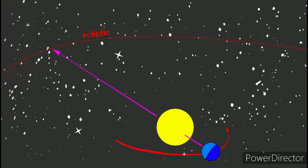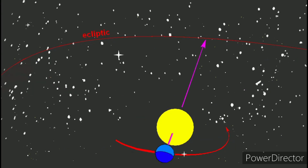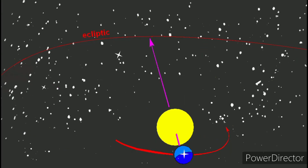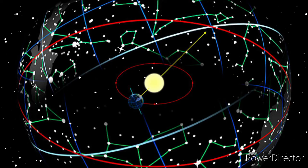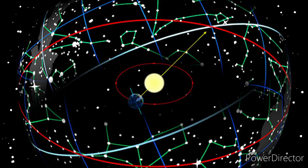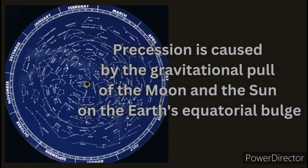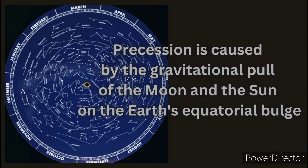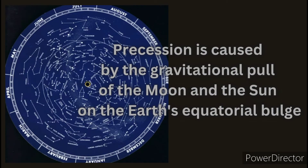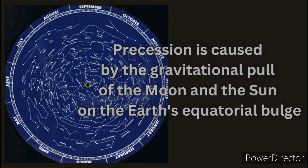Constellations are seen at different times of the year because of the Earth's orbit around the sun. As the Earth revolves around the sun, the position of the sun in the sky appears to change. As a result, the position of the stars relative to the sun also appears to change. This apparent change is due to the fact that the stars are very far away from the Earth and therefore appear to be fixed in the sky. The position of constellations also changes over long periods of time due to the phenomenon known as precession, which is caused by the gravitational pull of the moon and the sun on the Earth's equatorial bulge.